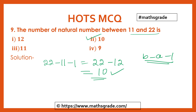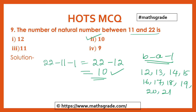The numbers between 11 and 22 are: 12, 13, 14, 15, 16, 17, 18, 19, 20, and 21. Since 'between' is mentioned, we do not include 11 and 22 themselves. It starts with 12 and ends with 21, giving us 10 numbers. So option 2, that is 10, is correct.